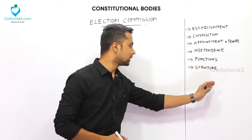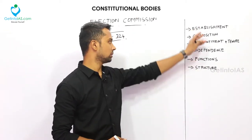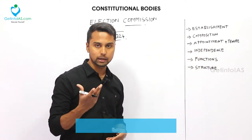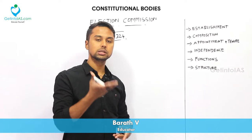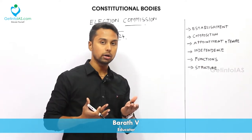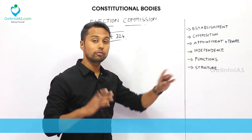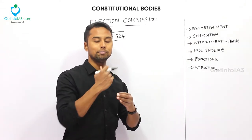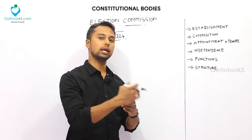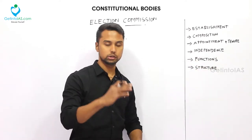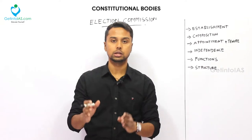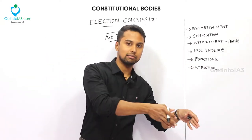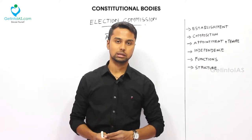These are the components we will study about the Election Commission: first, about the establishment; about the composition; about the appointment, tenure, and how it is independent. Election Commission is a permanent as well as an independent body. We will discuss in what way it is independent, and also the functions — what are the other functions apart from conducting elections — and the structure or hierarchy at the central, state, and district levels.